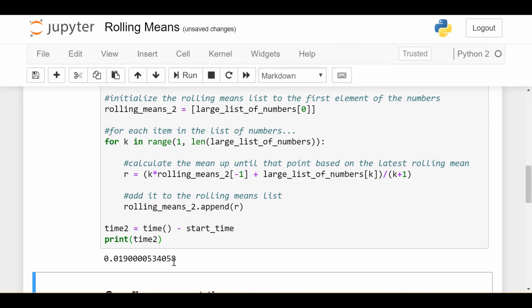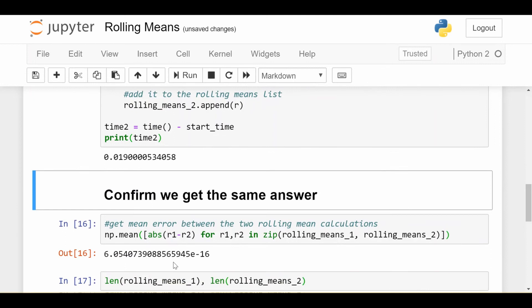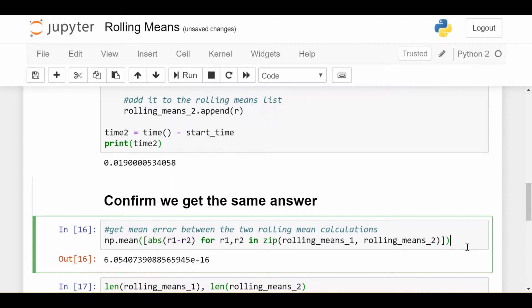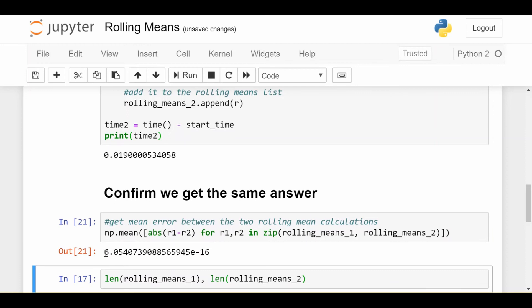Let me run this fresh lightning fast. It took 0.02 seconds about. Now, of course, let's confirm that in both cases we get the same answer so that we can set our minds at ease. One way we can confirm it is if we take our two rolling mean lists and take the element wise difference, we take the absolute value of the element wise difference between these two lists, it should be very, very small, right? Indeed, it's 6.05 times 10 to the negative 16.